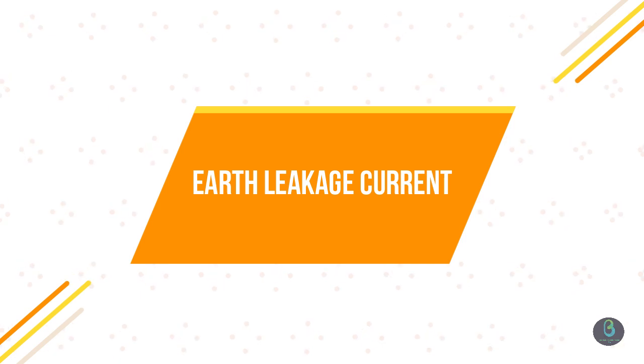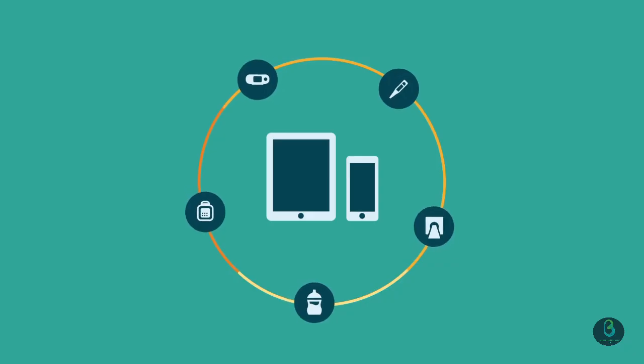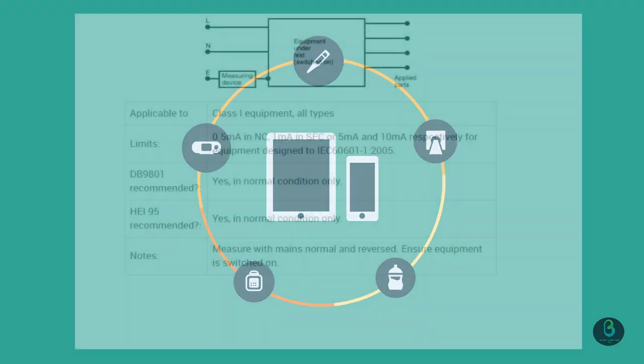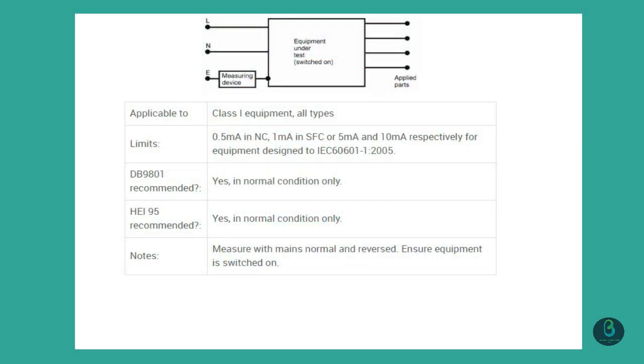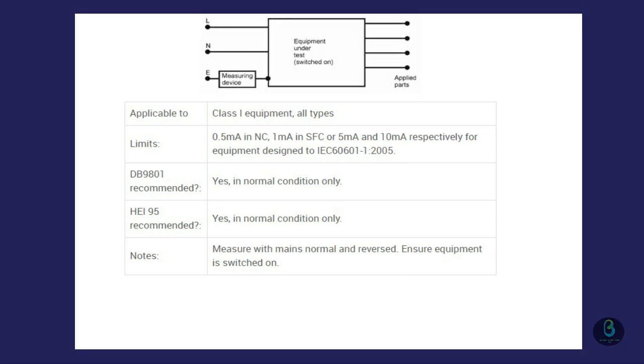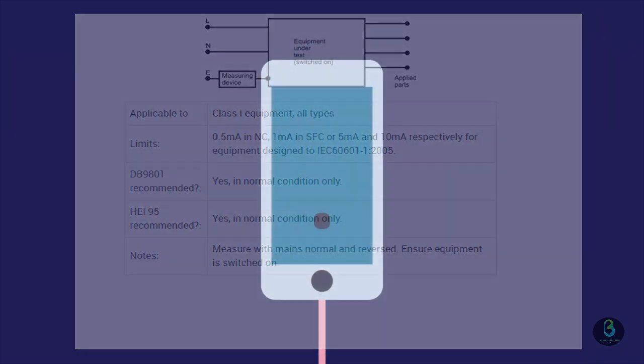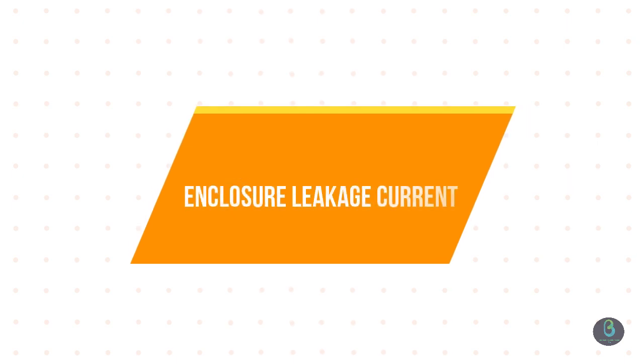Earth Leakage Current. For Class 1 equipment, earth leakage current is measured as shown in Figure 12. The current should be measured with the mains polarity normal and it is recommended that the earth leakage current be measured in normal condition only. Many safety testers offer the opportunity to perform the test under single fault condition, Neutral Conductor Open Circuit. This arrangement normally gives a higher leakage current reading.